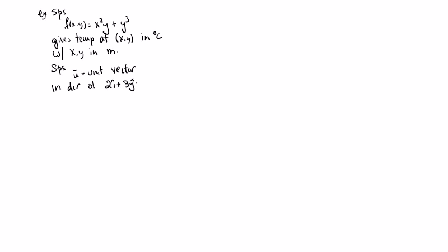So for example, I'll give an example that we can understand in real world terms. So we'll get back to this example of a function giving us a temperature. Say something like x squared y plus y cubed. Suppose this gives the temperature in degrees Celsius with x and y in meters. So suppose that u is the unit vector in the direction of 2i plus 3j. We'll find and interpret d sub u f of 3, 5.